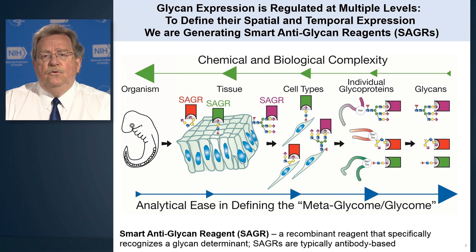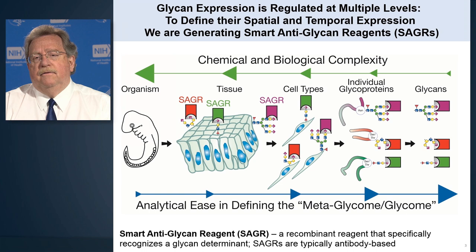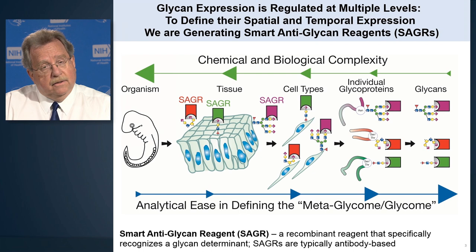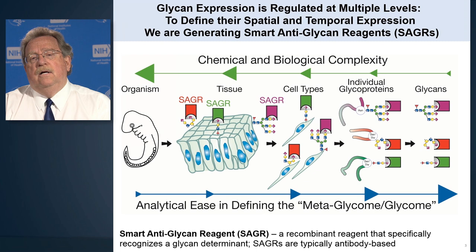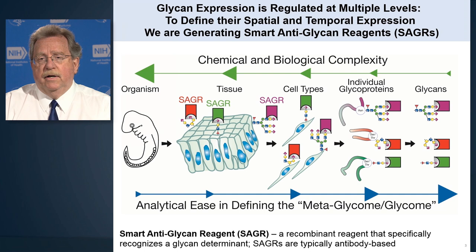We've been working on developing new tools, and we call them Smart Anti-Glycan Reagents. These are reagents that recognize specific features of a glycan — they're smart because they recognize very unique, very specific things in a glycan structure. We abbreviate them SAGRs, S-A-G-R-S. SAGRs are Smart Anti-Glycan Reagents, and they're really a kind of antibody.